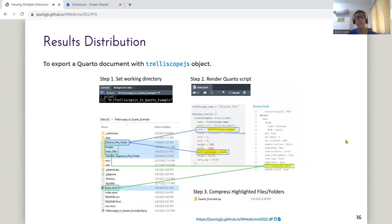To explore the Quarto document with Trelliscope.js objects, the changes that you need to make is on the Quarto YAML configuration. Ensure that it's set to false for the self-contained parameter. And then clicking on the button render will give you these folders as well in green and in blue. And then choosing all these highlighted folders, you can compress them into a zip file and send to your collaborators.